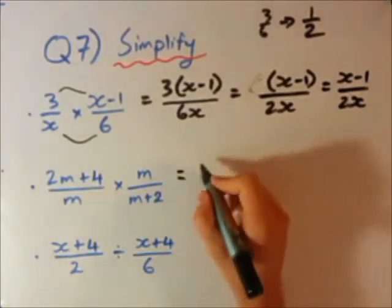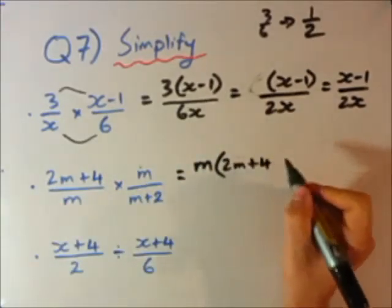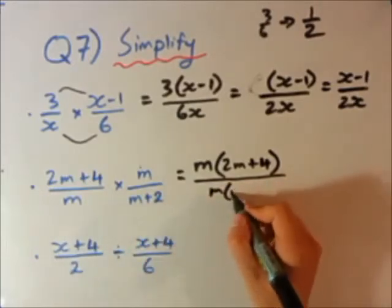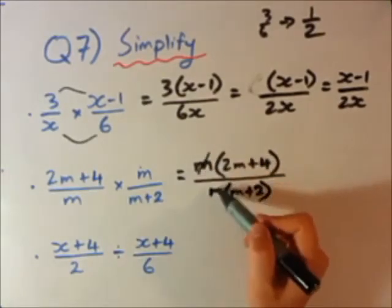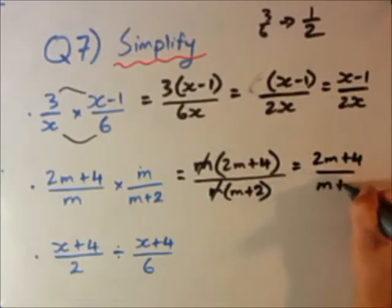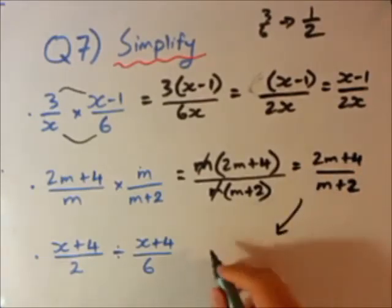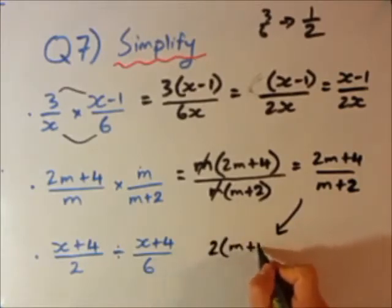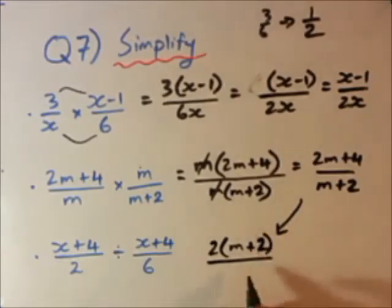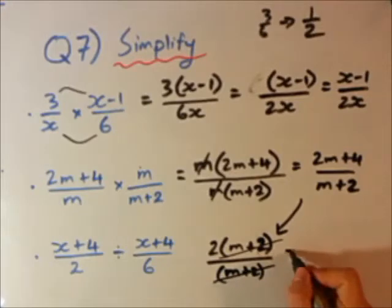Second one. Times the top: m times (2m plus 4). It's always good to keep things in brackets. Times the bottom: m times (m plus 2). Now m divided by m — we can straight away cancel those. That leaves 2m plus 4 over m plus 2. It's not quite finished — let's factorise the top line. 2 is common to both, so we get 2(m plus 2) over (m plus 2). The (m plus 2) cancels, and we're just left with 2.